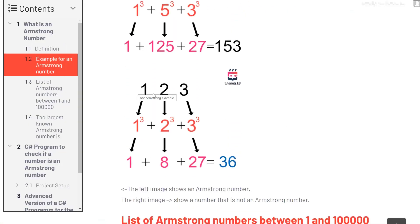Now let's compare this with 123. We again have three digits in total, so we raise each digit to the power of 3: 1³ plus 2³ plus 3³. The sum is 36, which is not 123, so this is not an Armstrong number.